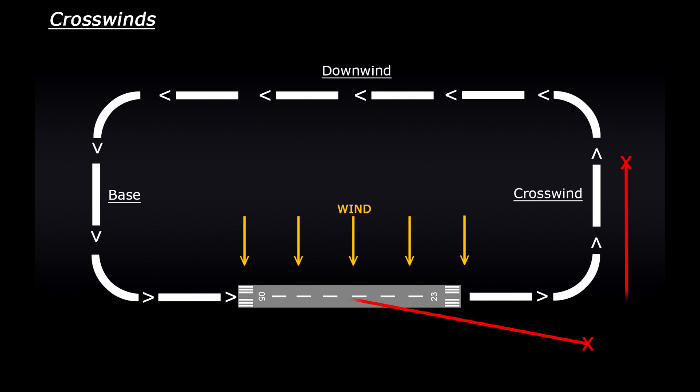As you turn onto the downwind leg, the wind will be trying to push you sideways, so you need to account for and correct that. Coming round to base, the wind will be behind you, which increases your ground speed, so you need to be ready to turn onto final a bit quicker than normal. And then, of course, from there you're on final, ready to practice crabbing or slipping.